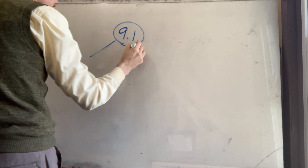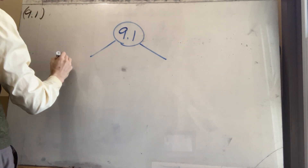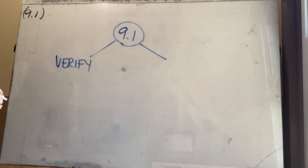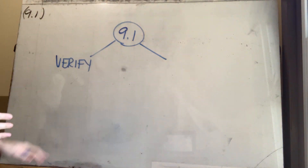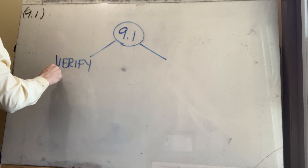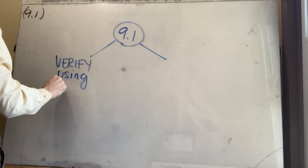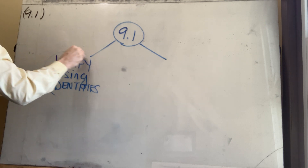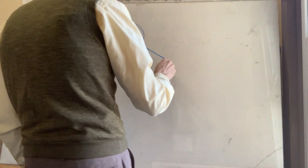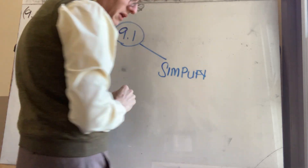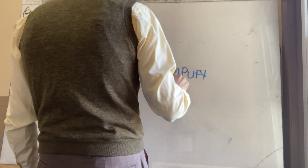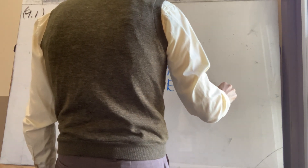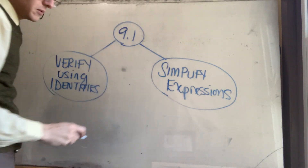Here's an overview of the section. In Section 9-1, there are two things we'll primarily do. First, you're going to verify that one side of an equation is equal to another side — that is why it's entitled 'solving equations,' but it's not exactly the same thing. The second thing is simplifying. They're really the same process, just from a different perspective.